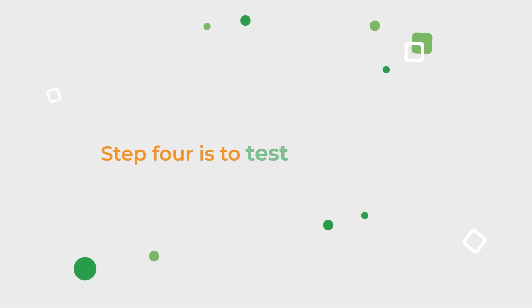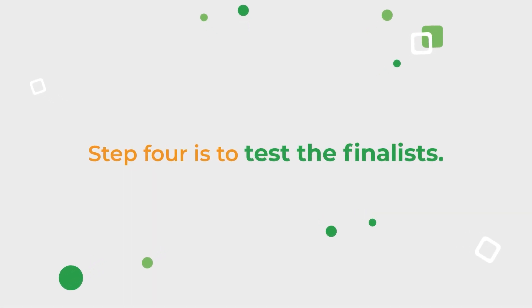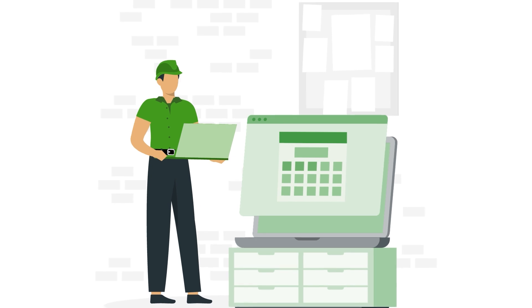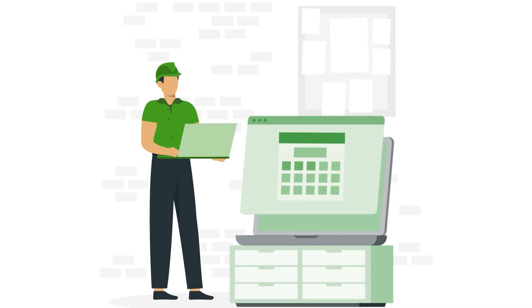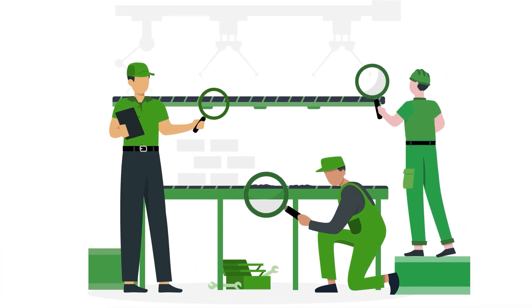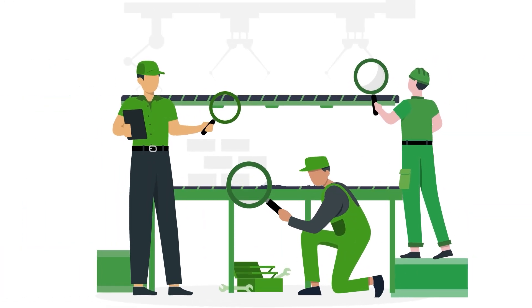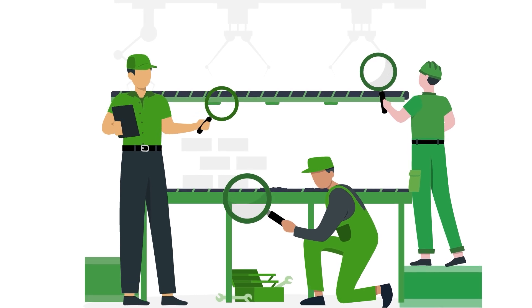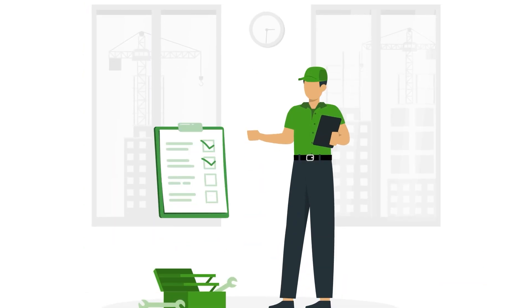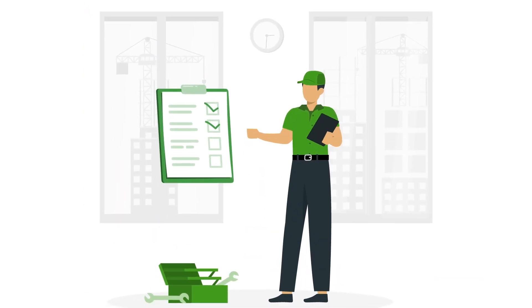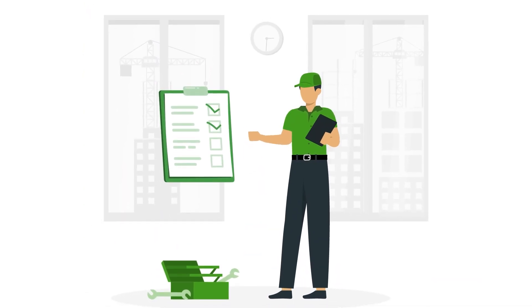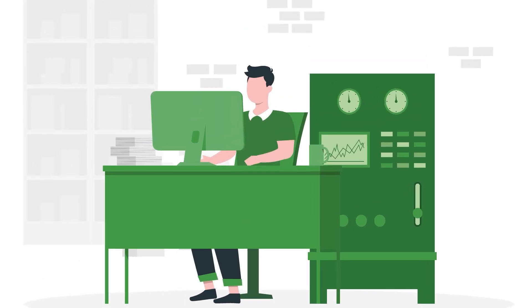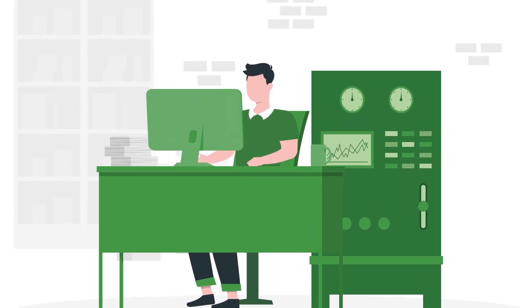Step 4 is to test the finalists. Most CMMS vendors offer free trials that last from two to four weeks. Engage your team in trialing each of your finalists in real-life situations. Measure how long it takes to perform routine tasks like approving work requests, scheduling PMs, or adding assets to the system.